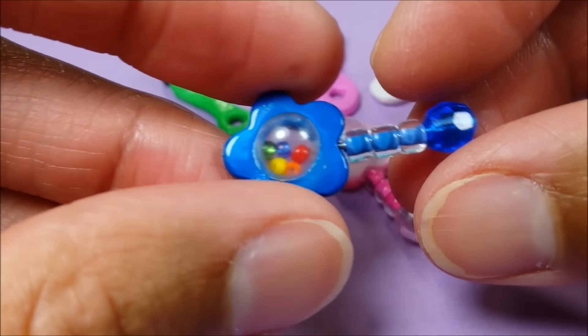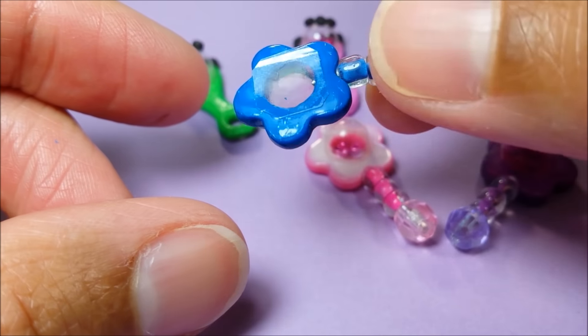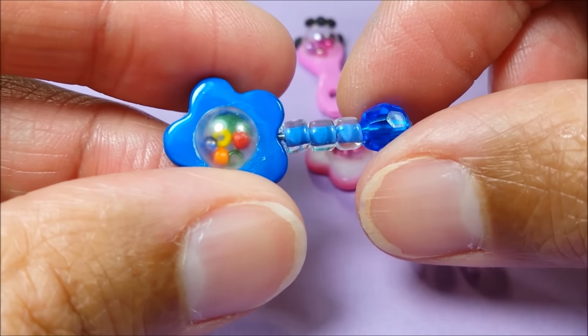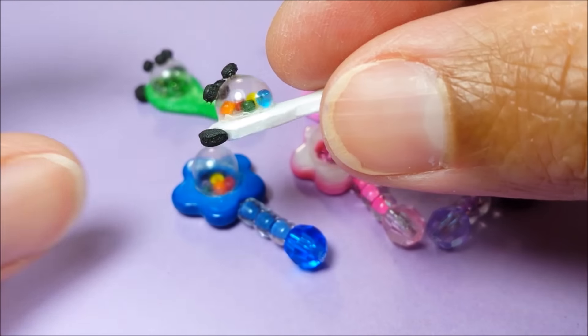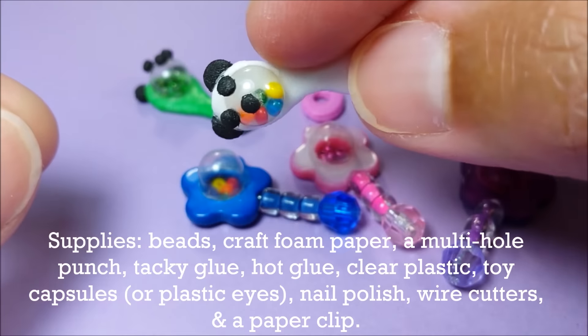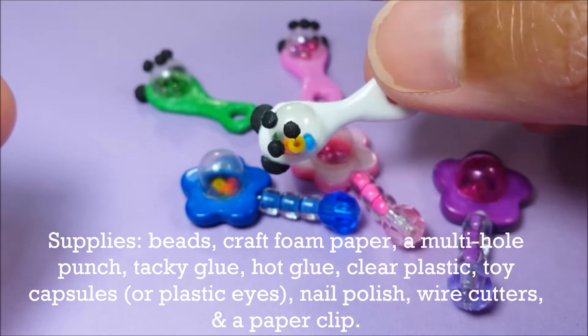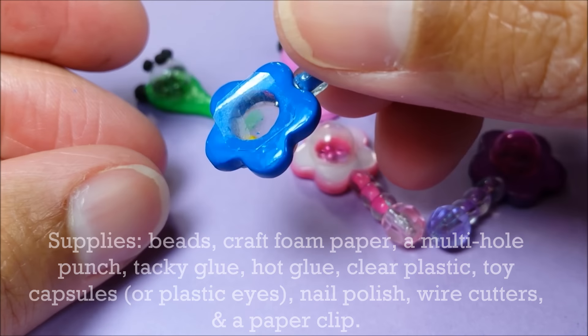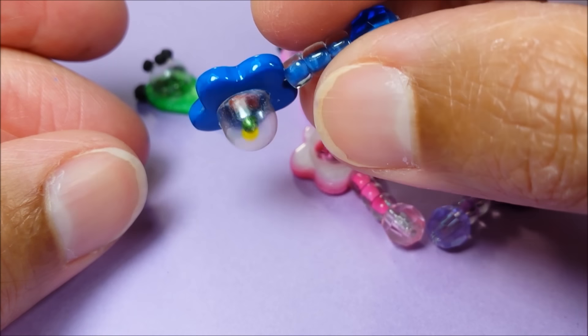Hey guys, today I'm making these tiny little rattles for your dolls. I have two different styles here, just in case you don't have all the supplies. This one here is a little bit easier, just made out of craft foam paper. If you're new to my channel and you like what you see, please feel free to click that subscribe button. Kids, be sure and ask a parent for help before starting this craft.